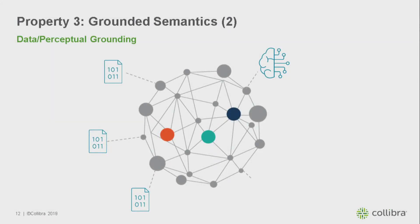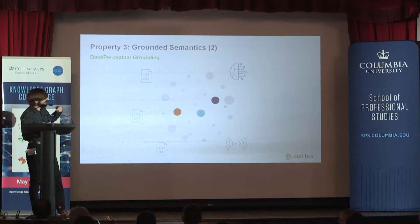We can extend this grounding by adding sub-symbolic models. You can have a node that says 'car' and it's linked to a model that can detect a car in the real world — a probabilistic model linking the actual label to a thing in the world. Go one step further and add a sensor to this network: a node that says 'average customers coming to the store' linked to a people detector, giving you a physical and perceptual grounding. Nothing better than that.